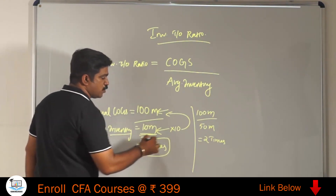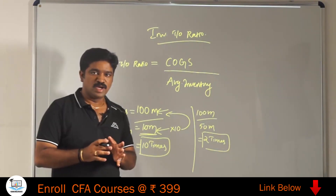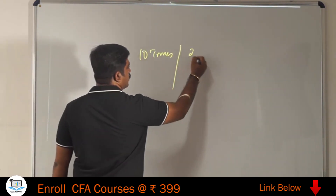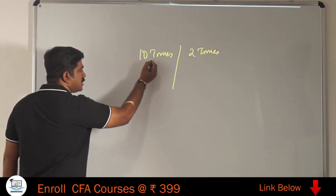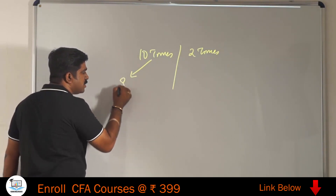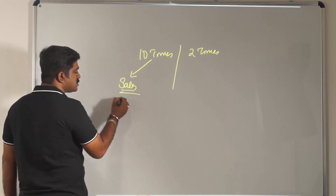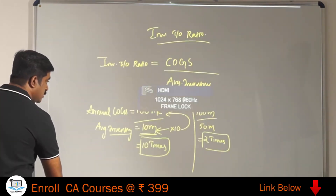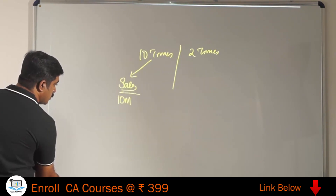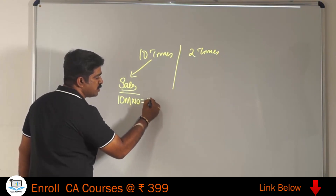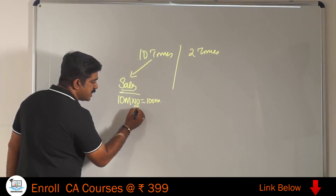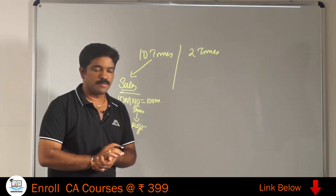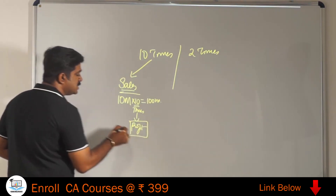What is the benefit when inventory is rotated 10 times, and what are you losing when it is rotated only two times? If inventory is rotated 10 times, it means you are making sales 10 times — 10 million multiplied by 10 times equals 100 million cost of goods sold. The point is this entire 10 times is going to bring in profit. Your profit-making capacity is 10 times on that 10 million inventory.